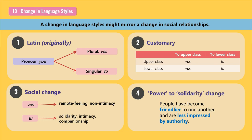Next, change in language styles. A change in language styles likely mirrors a change in social relationships. An example occurred in the gradual meaning change of the two forms of the pronoun 'you' in European languages. Originally in Latin there was a singular form 'tu' and a plural form 'vos.' For some reason 'vos' came to be used as a polite form to address a person in authority. It became customary for working class persons to address upper class men as 'vos' and to be addressed as 'tu.' Gradually, as feudalism died out, 'vos' came to mark non-intimacy and distant relations, while 'tu' came to indicate intimacy, companionship, and solidarity — a power-to-solidarity shift taking place worldwide.